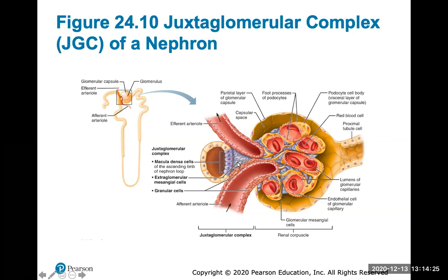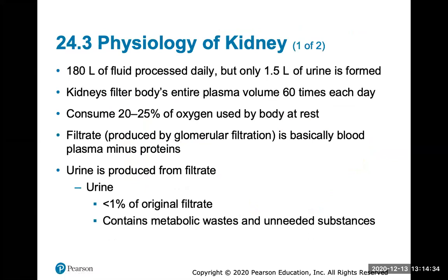The physiology of the kidney: the process of forming urine involves about 180 liters of fluid processed daily, but only about 1.5 liters of urine is formed. The kidneys' main function is to filter your plasma up to 60 times a day, consuming about 20 to 25 percent of oxygen at rest. Filtrate produced by glomerular filtration is basically blood plasma minus all the proteins — you never want proteins to get into your filtrate or urine, as that is usually a cause for alarm, often seen in diabetes.